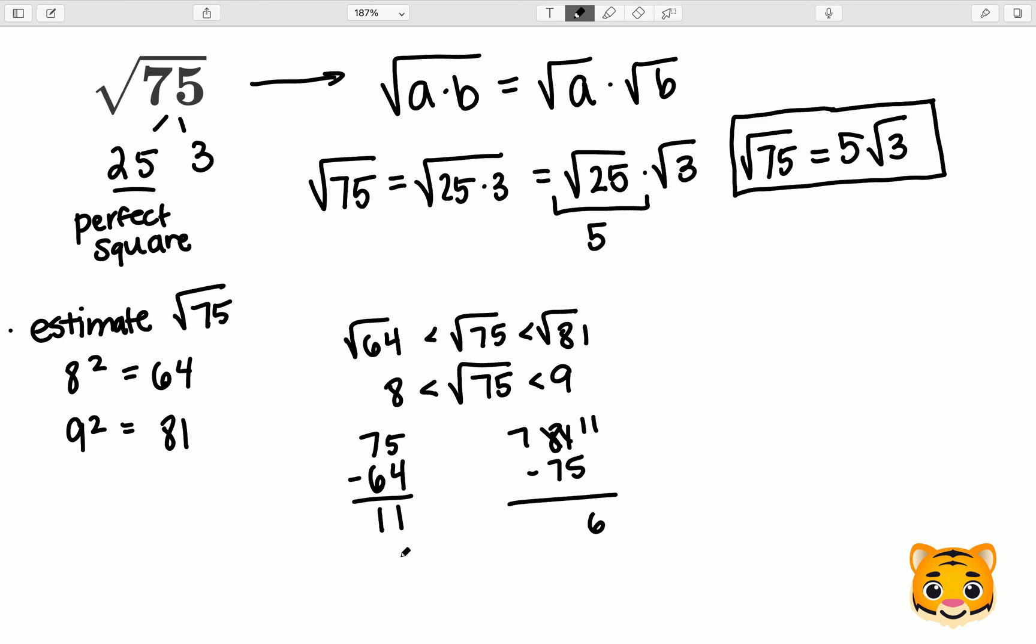Because 6 is less than 11, that means that the square root of 75 is closest to 9. Therefore, we can estimate the square root of 75 as being approximately 9.